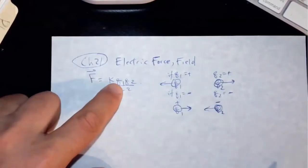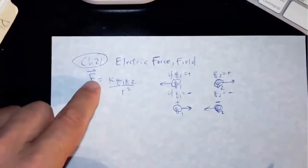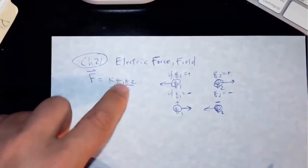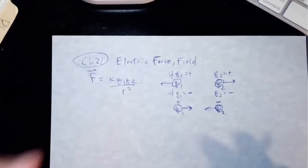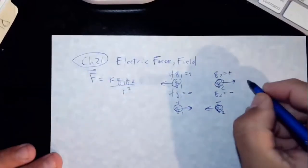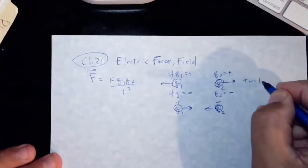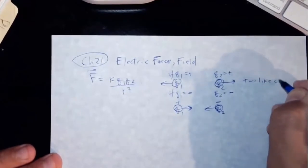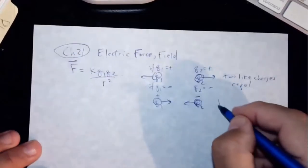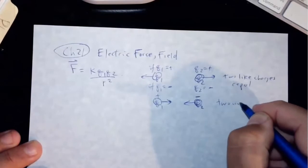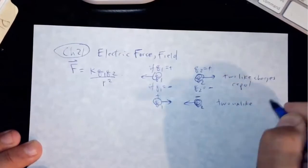So if one of them here is positive, the other one is negative, then the force comes out to be negative, in which case it's attractive. So two like charges repel, and two unlike charges attract.